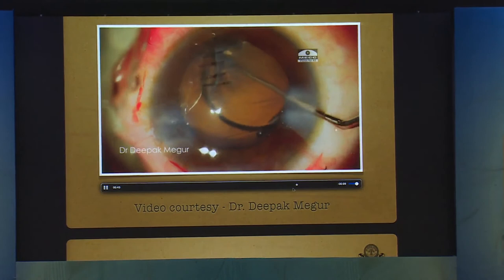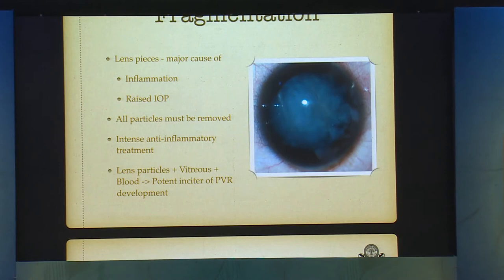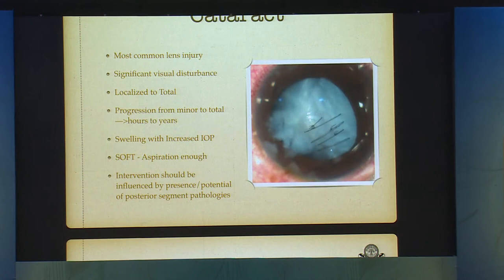Lens fragmentation is the major cause of inflammation in such cases; it causes a rise in IOP. All lens particles in the anterior chamber have to be removed, because lens particles plus vitreous plus blood are a potential inciter for PVR development. Cataract is the most common form of injury and the main cause of visual disturbance apart from astigmatism post-tear. Progression can occur from minor to total in hours to years. Aspiration will generally do the job for soft lenses, and intervention should be influenced by the presence or potential of posterior segment pathology.